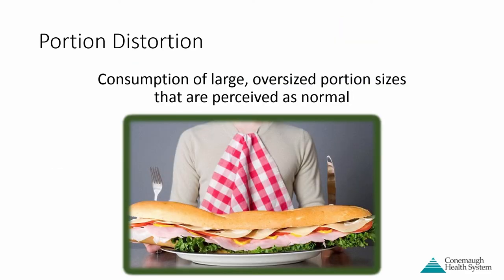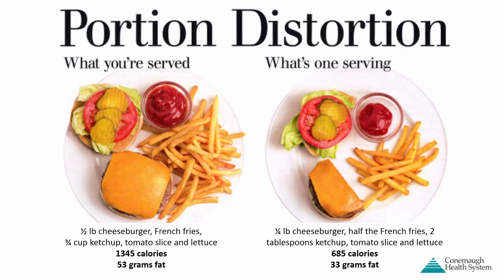The formal definition of portion distortion is the consumption of large, oversized portions that we perceive as being normal. Over the years, what we see has become distorted in terms of what is normal. A typical American meal — a cheeseburger and fries — illustrates this well: on the left is what we're actually served, on the right is what one serving actually is. There's a really big difference in calories and fat, and it's easy to see where all those extra calories are coming from.